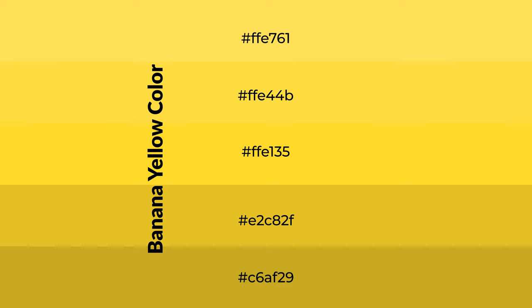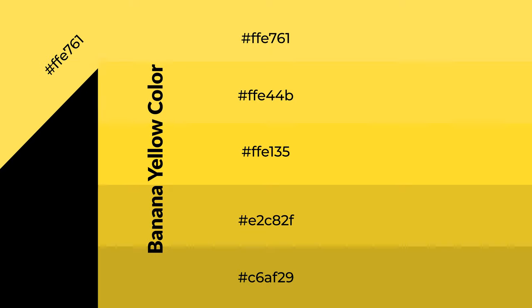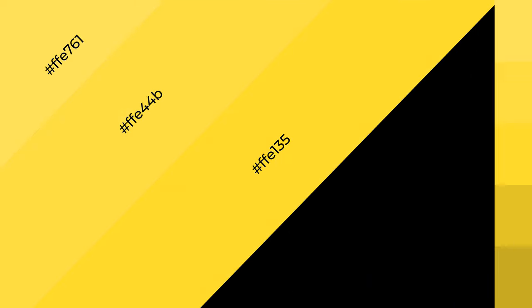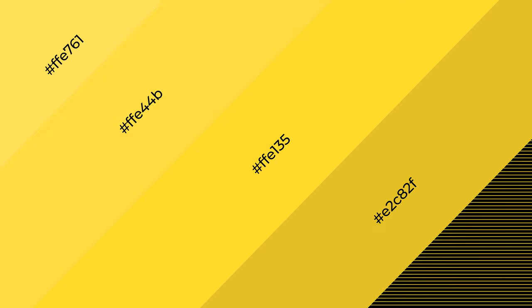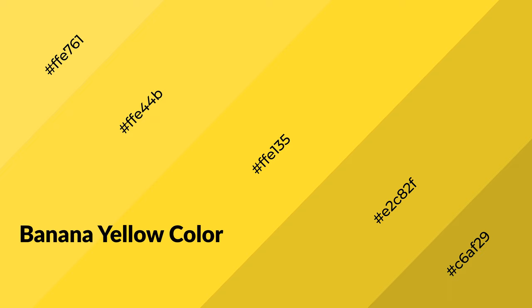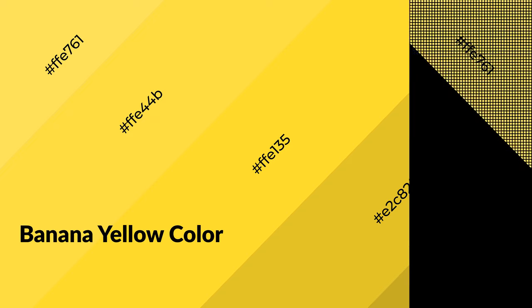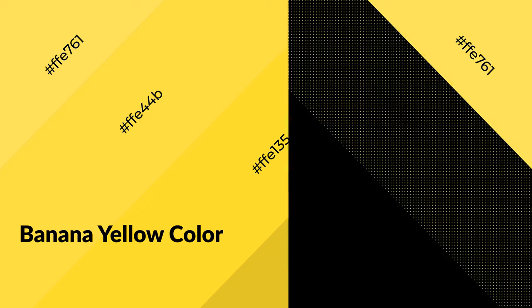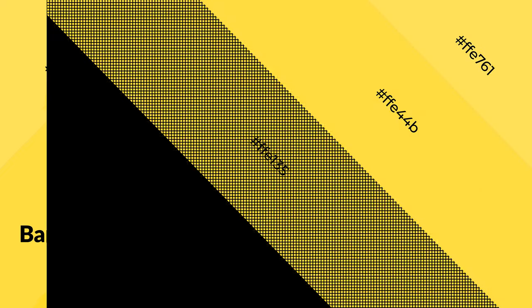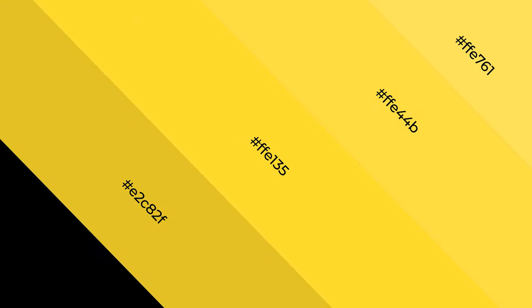To generate shades of a color, we add black to the color. It is used in patterns, 3D effects, and layers. Shades create depth and drama. Banana yellow is a warm color and it emits cozier and active emotions. Warm colors are symbols of warmth, fire, and heat.